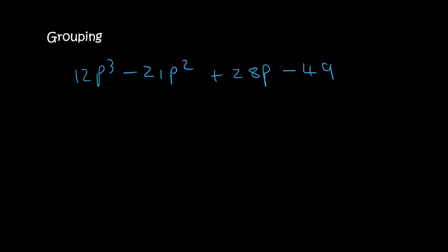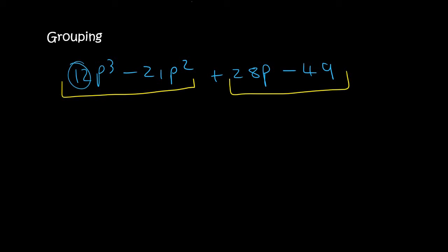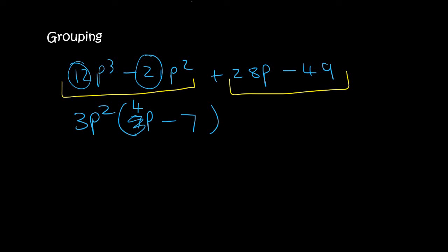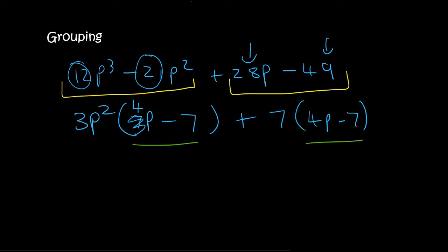Here's another one. We group the first two terms. The common number that goes into 12 and 21 is 3, and you can take out p squared. You'd be left with 4p minus 7. Then for the second pair, take out a 7, and you'd be left with 4p minus 7. Those are the same, so we've grouped correctly. We take out 4p minus 7 as the common factor, and we're left with 3p squared plus 7.